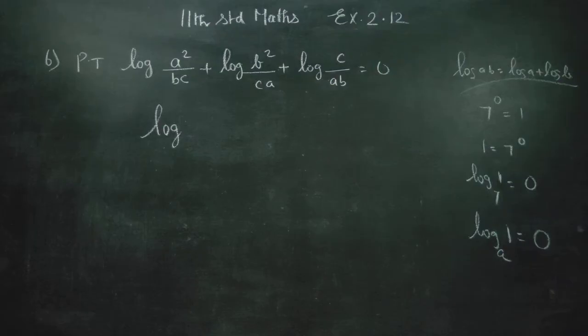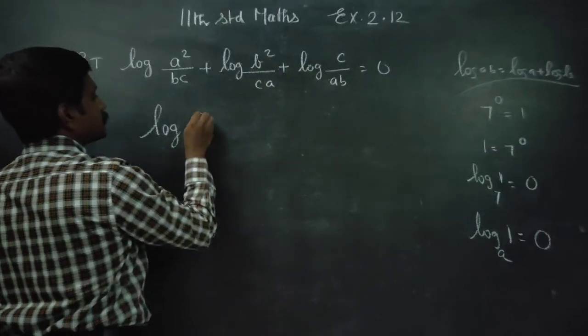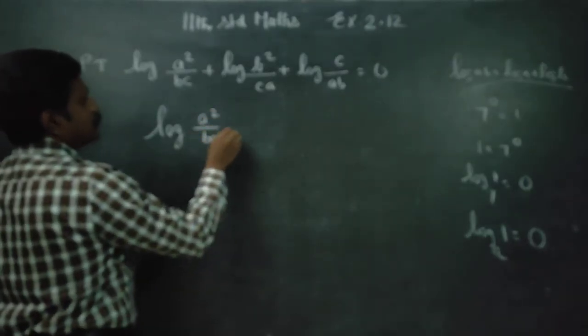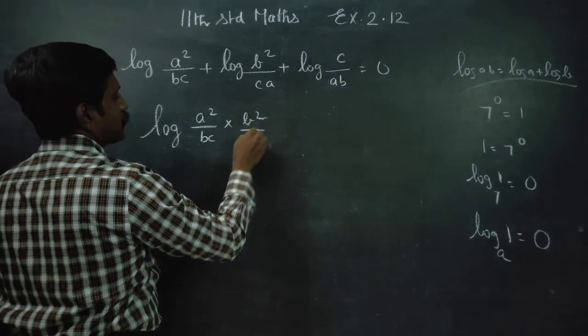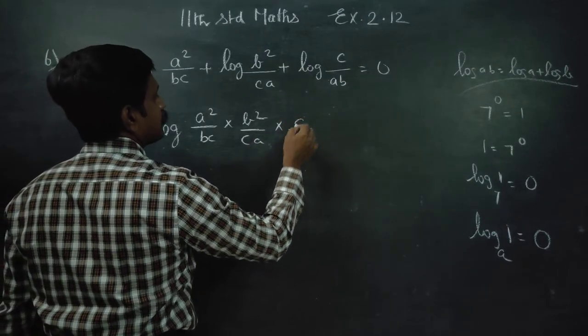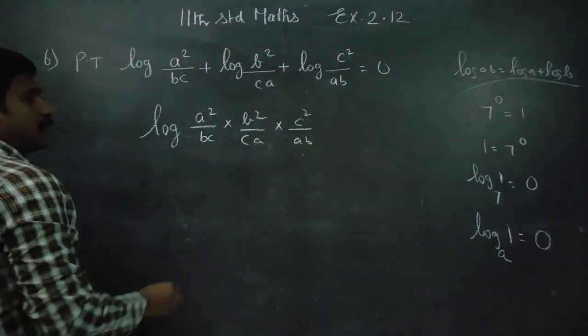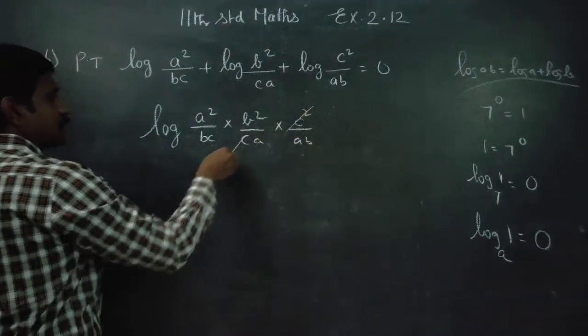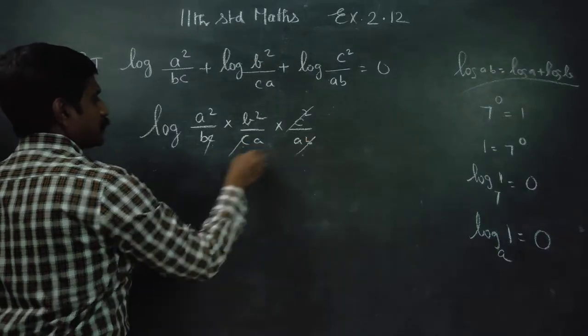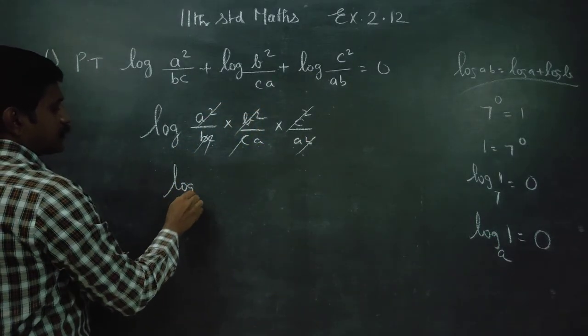Log equals a squared over bc times b squared over ca times c squared over ab. This is actually c squared. Here is c squared canceled. Here is b squared canceled. A squared canceled. All the cancellation is log 1.